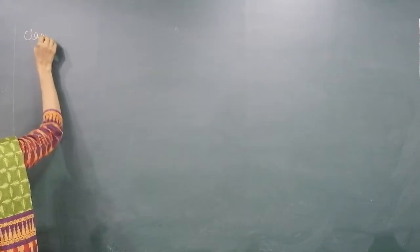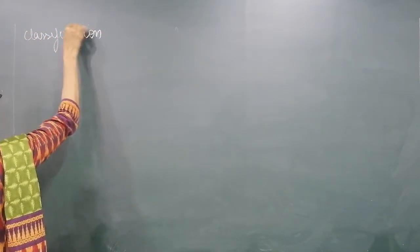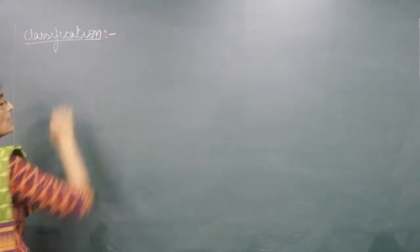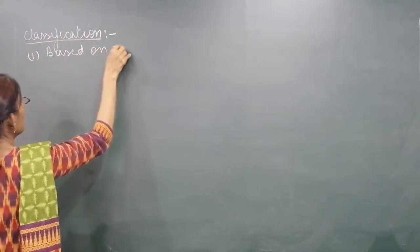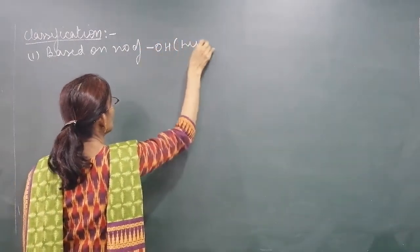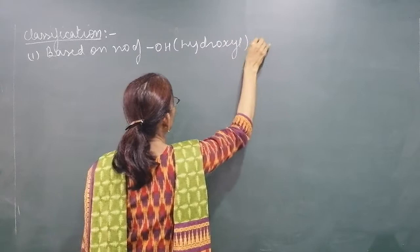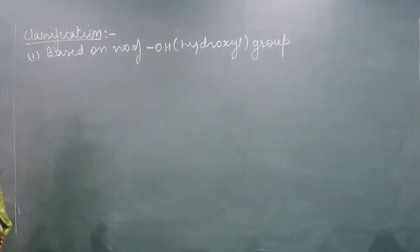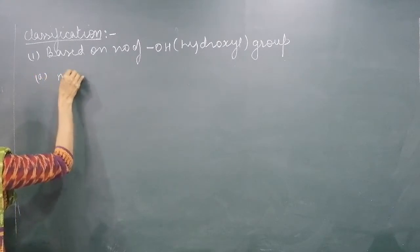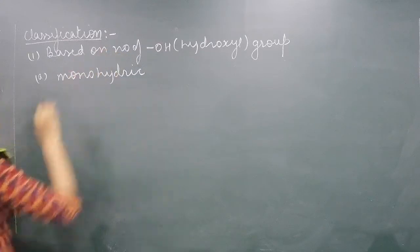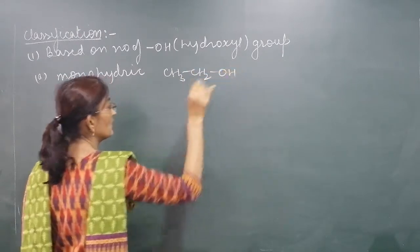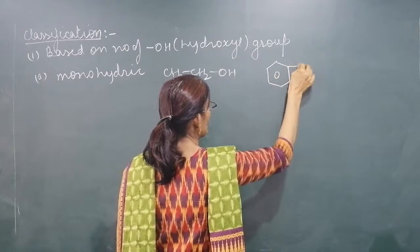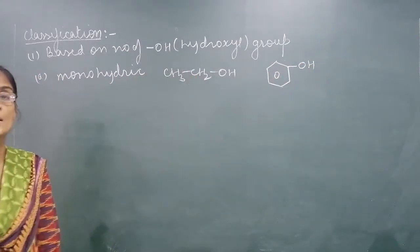The first classification is based on the number of Hydroxyl groups. Based on the number of OH groups, the first type is Monohydric. Monohydric means they have only one OH group. For example, CH3-CH2-OH. These consist of only one OH group, so they are known as Monohydric.